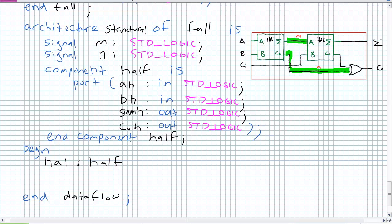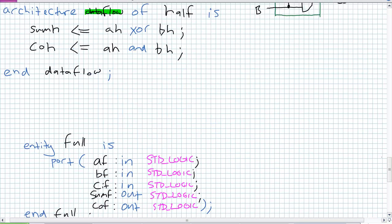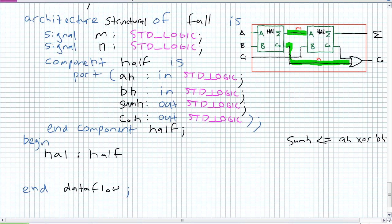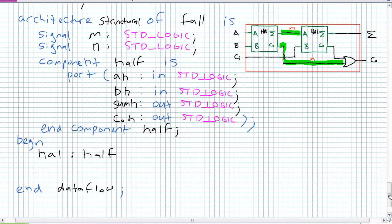Now what you've got to do is a port map. In data flow, sum for the half — the arrow goes that way: SUM_H is assigned AH XOR BH. The port map is almost the opposite world of that — the arrow goes the other way. So how do I write the port map for HA1? Its A input is the AF full input. Its B input is the BF full input. Its sum output maps to internal signal M. Its carry out maps to internal signal N.